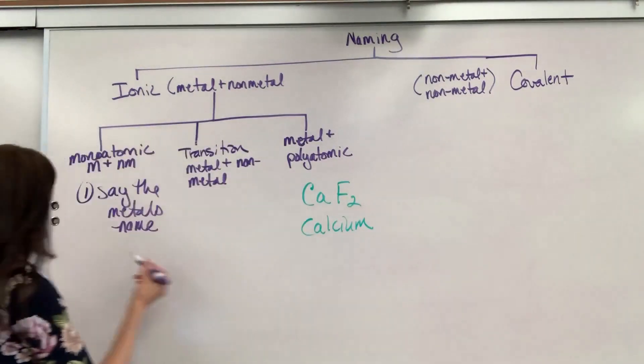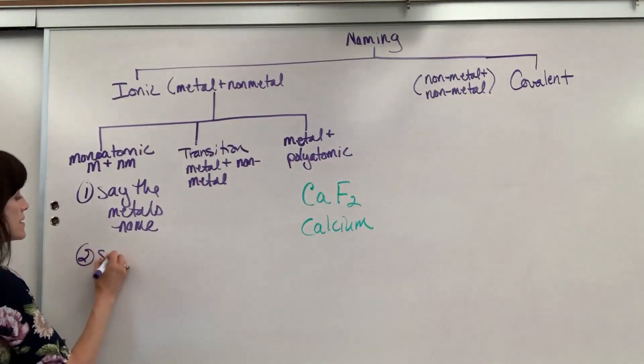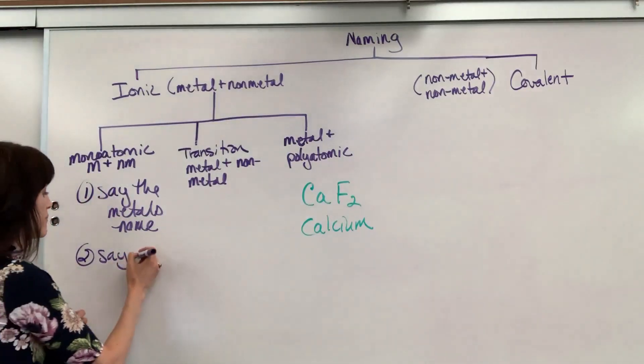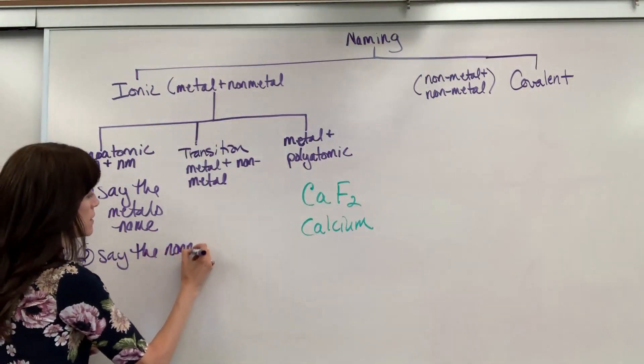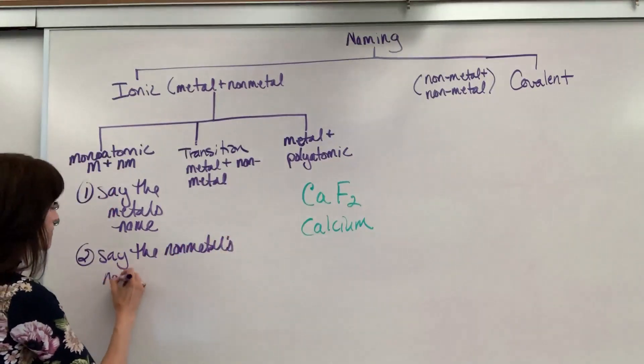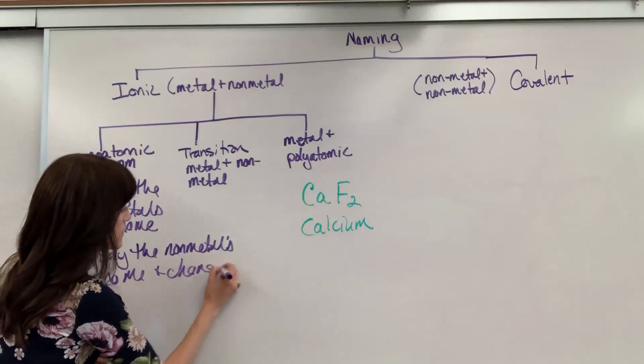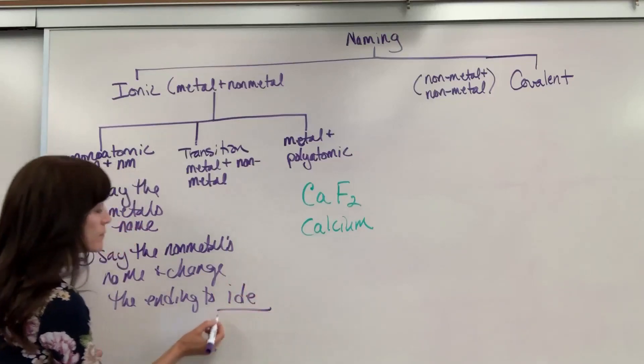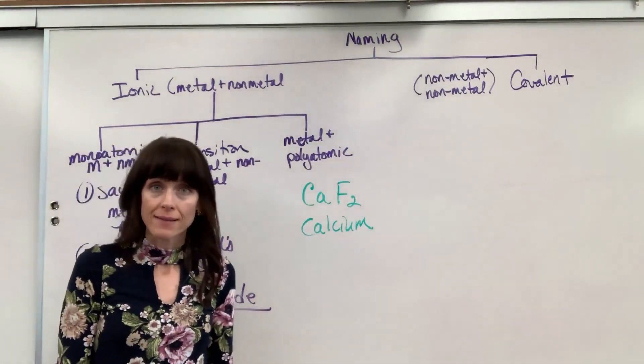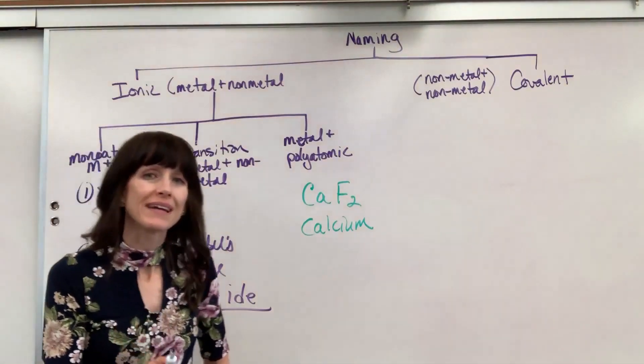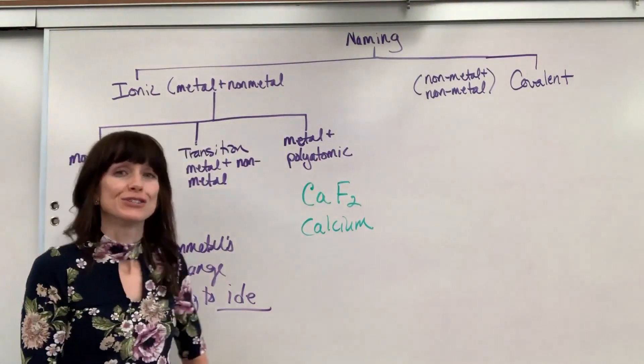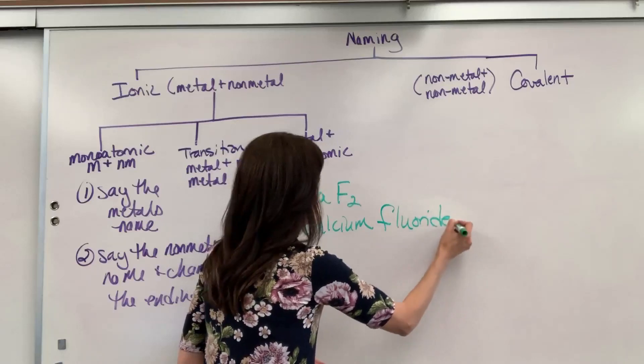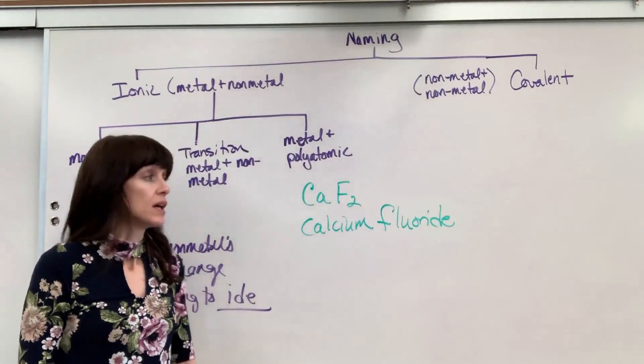Next, you simply say the non-metal's name but change the ending to I-D-E. So I look - I have fluorine, it's a non-metal. I'm going to say fluorine and change that ending to I-D-E, which is fluoride. There we have it: calcium fluoride. Let's do another one.